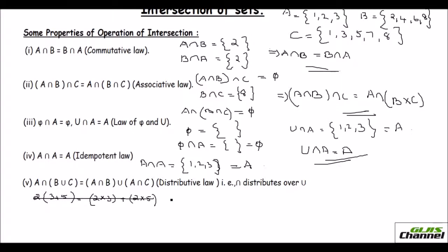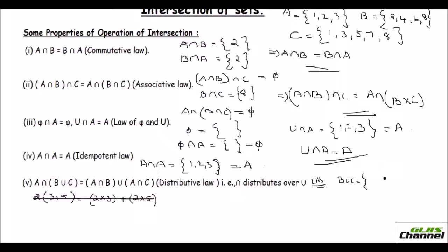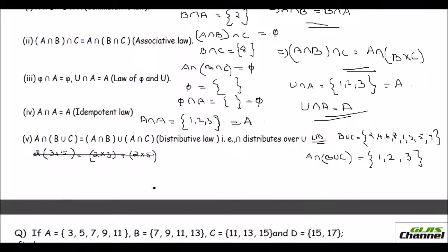Finally we have the distributive law where you distribute the intersection over the union. Starting with the left hand side: first I have to do B union C, which is all values of B and C — 2, 4, 6, 8, 1, 3, 5, 7 (don't write 8 again). Now A intersection (B union C): what is common in A and B union C? That is 1, 2, and 3.